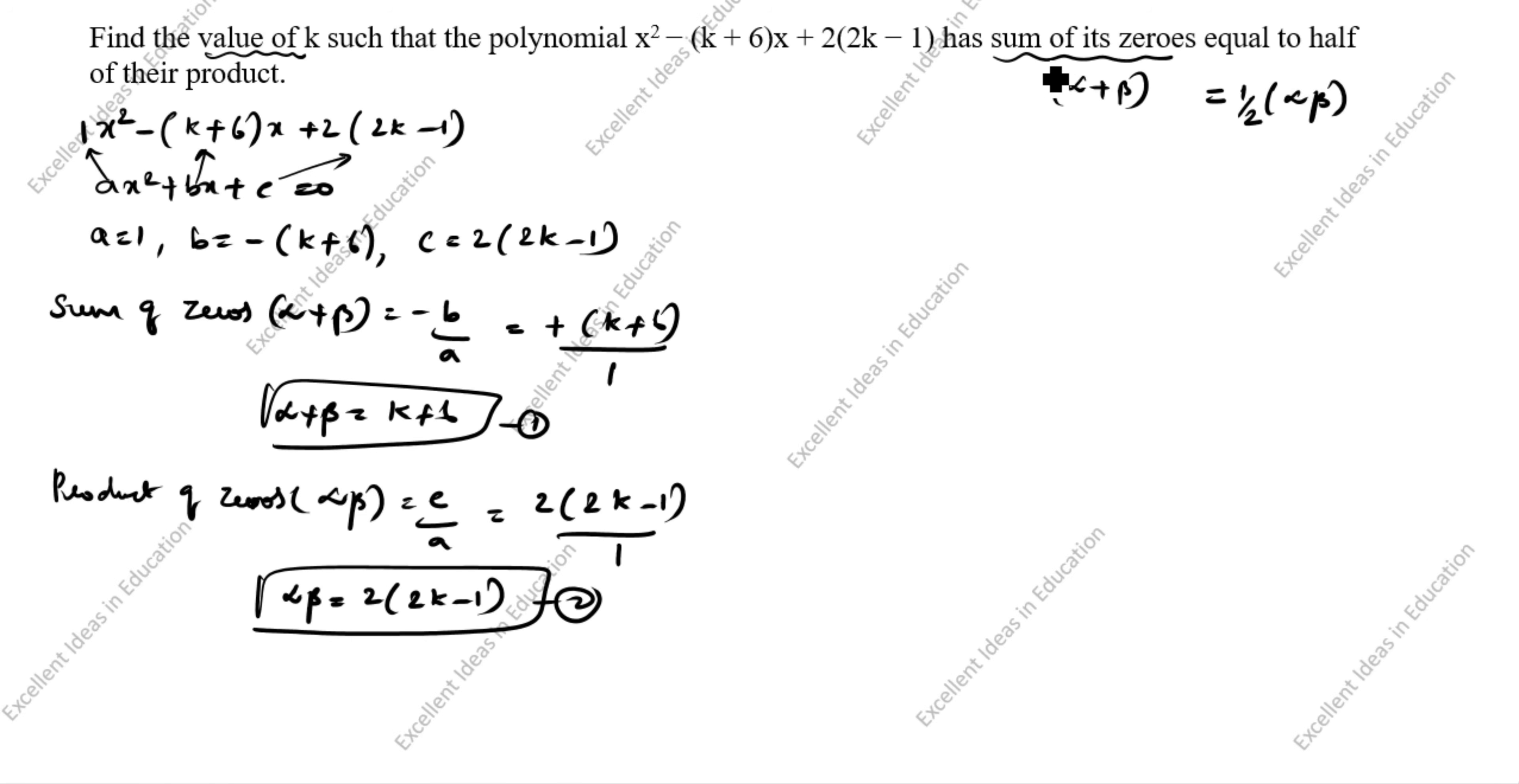In this question, what is given? Sum of its zeros equal to half of the product. So we will take α + β = ½(αβ). What is α + β? That is sum of zeros, which is k + 6, equal to half into product of zeros, which is 2(2k - 1). This 2 and this 2 cancel.